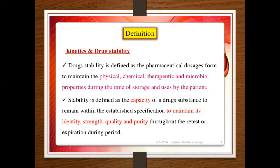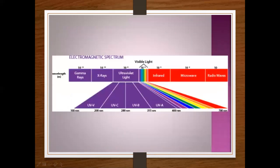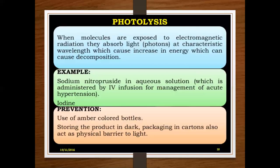Introduction to UV light: ultraviolet radiation covers a small part of the electromagnetic spectrum lying between the violet end of visible light and the X-ray region. Here is the electromagnetic spectrum — you can see the ultraviolet region lying between X-rays and the violet light of the visible spectrum.